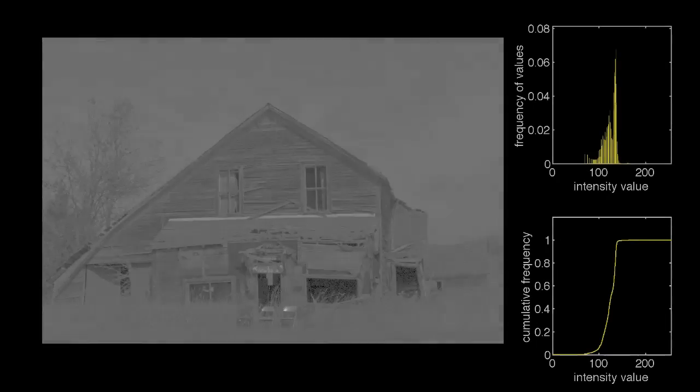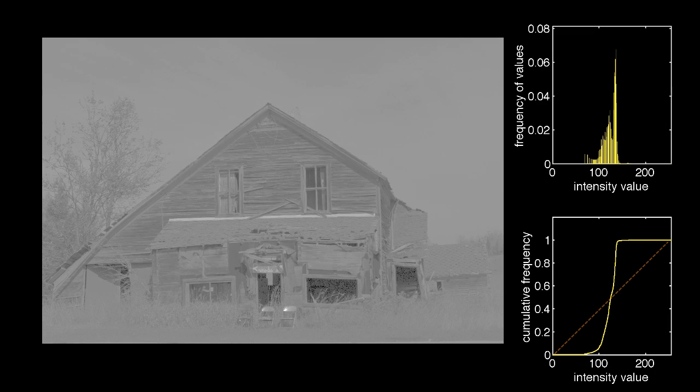Now here's a low contrast image. According to the cumulative frequency plot, we'd need to decrease its low intensities and increase its high intensities. Now let's see what happens when we do that.